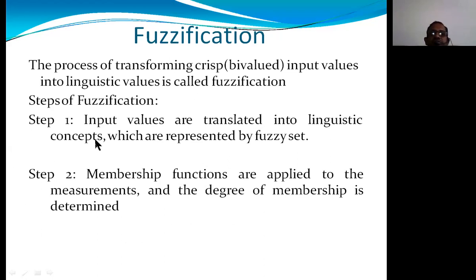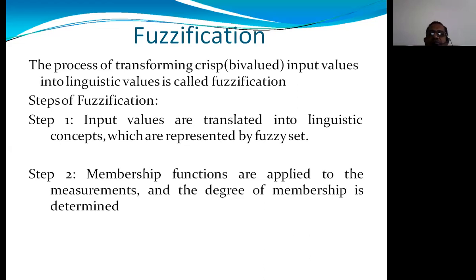The steps in fuzzification are: first, input values are translated into linguistic concepts or linguistic values represented by fuzzy sets. Second, membership functions — such as triangular, trapezoidal, or Gaussian — are applied to the measurements, and the degree of membership is determined. Third, a fuzzy system processes these fuzzy values.